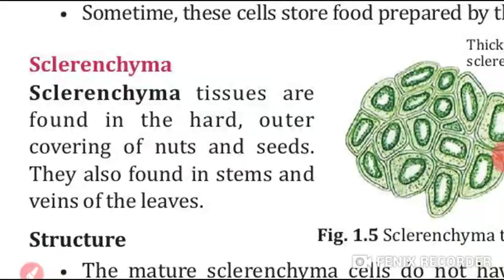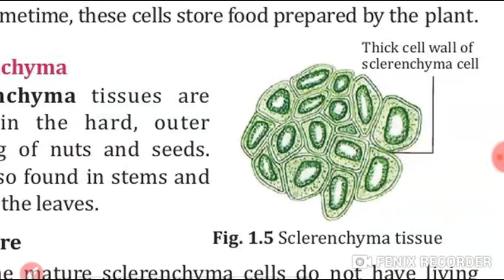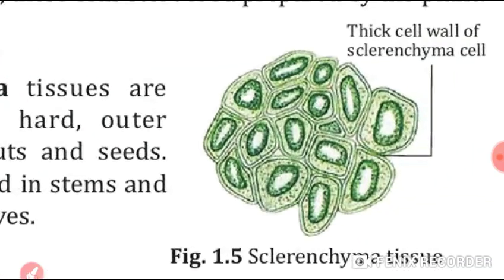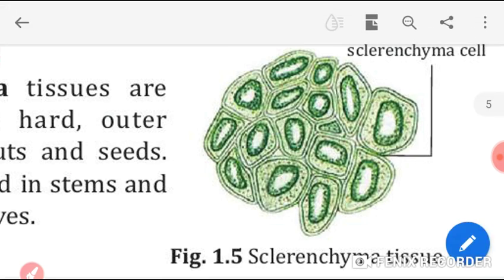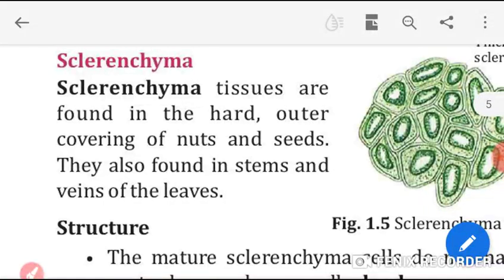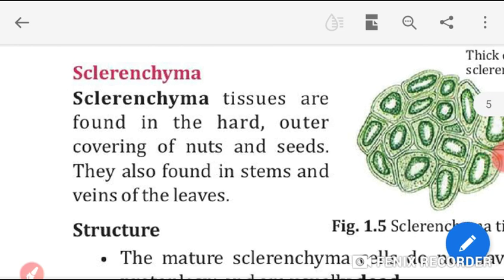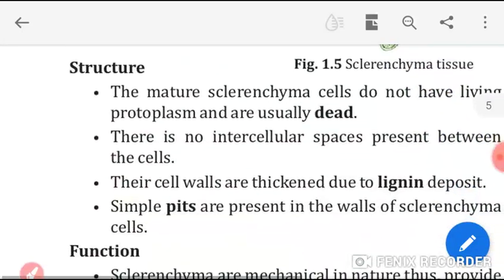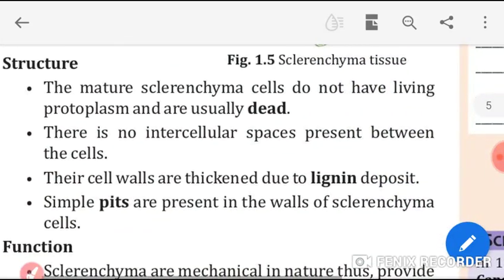Now we will look at sclerenchyma tissues. This is the picture of sclerenchyma tissue — you can see that the cell walls of these tissues are thick. These tissues are found in hard and outer coverings of nuts and seeds, and also in stems and veins of leaves.